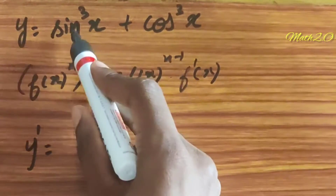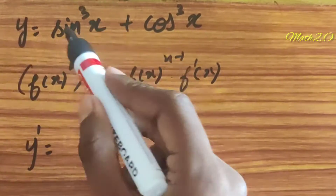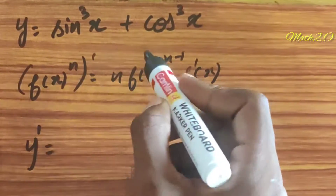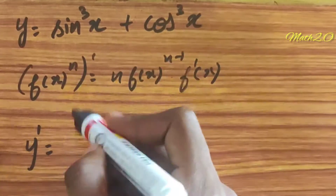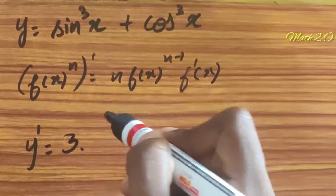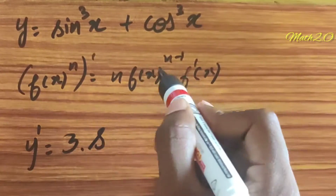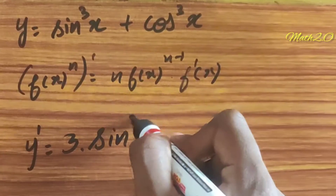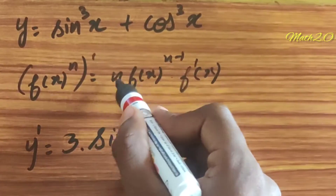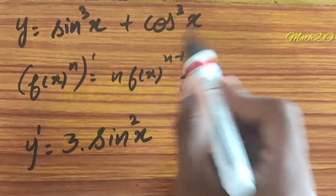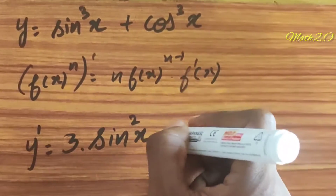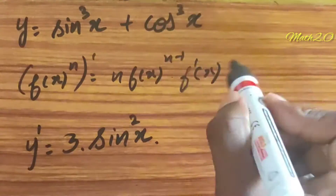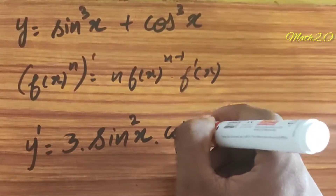y dash is equal to: differentiating sin x power 3, it is 3 into sin power 2 x — that is n into f(x) power n minus 1 — into f dash of x, which is the derivative of sin x, that is cos x.